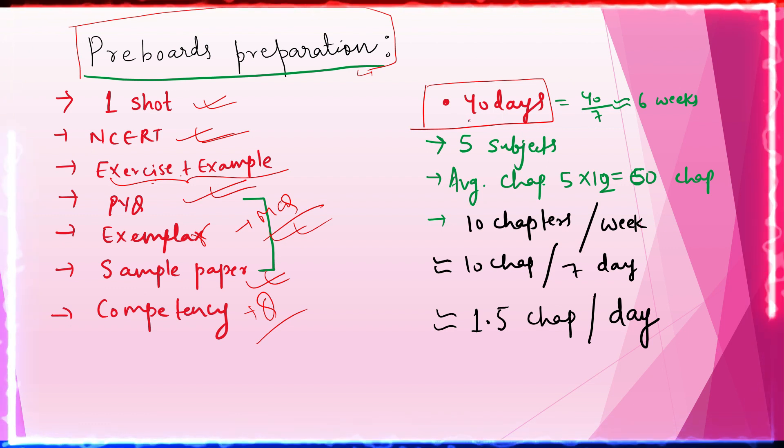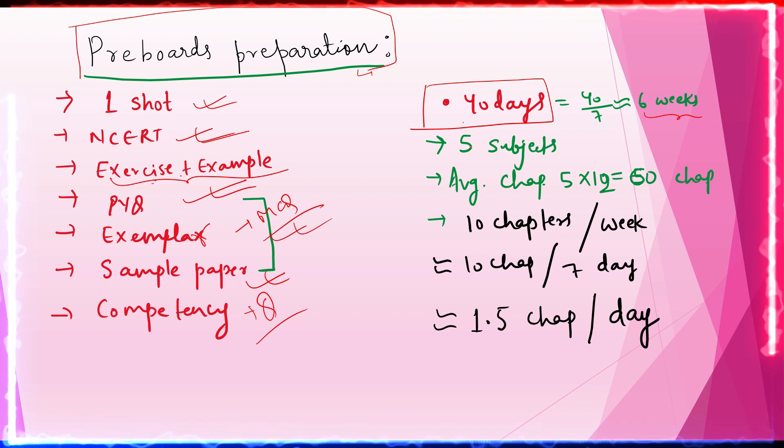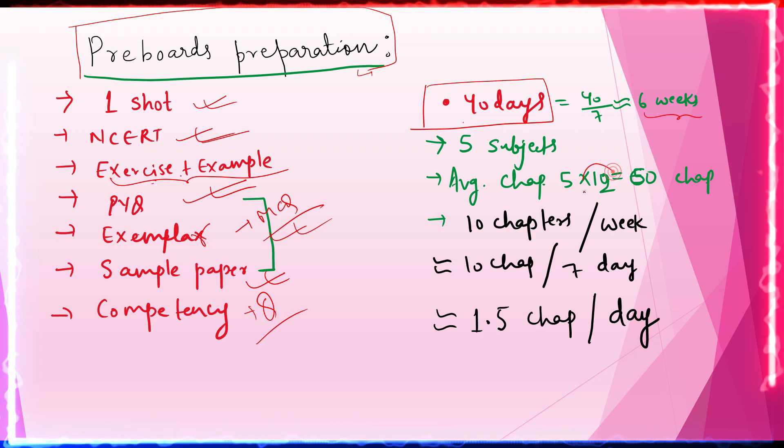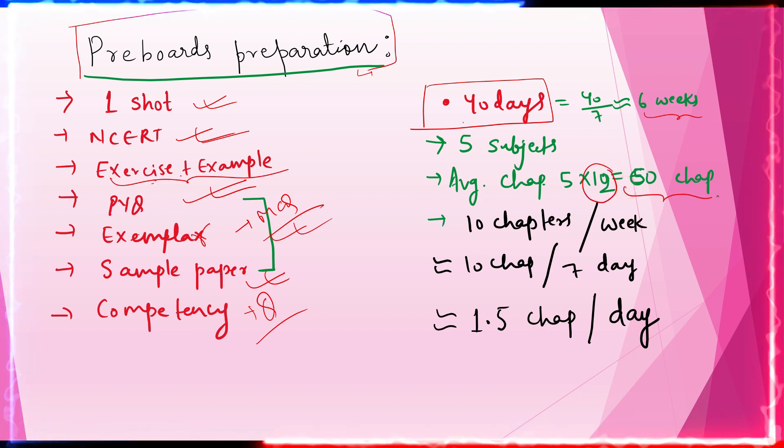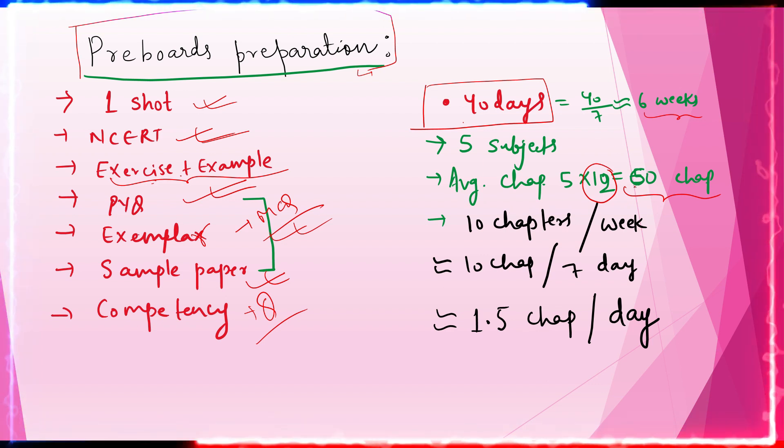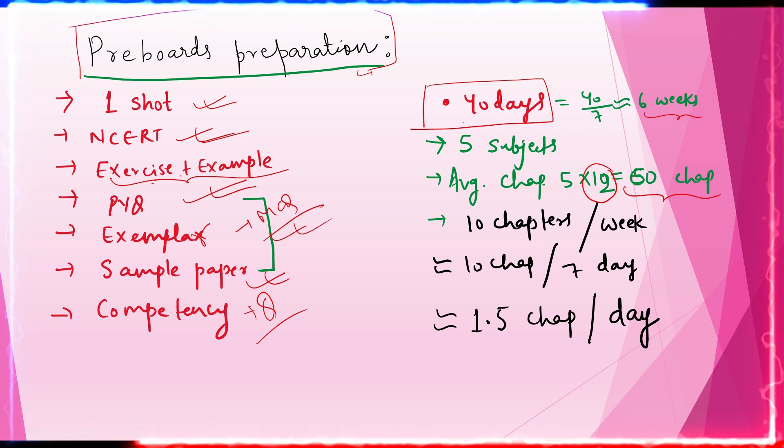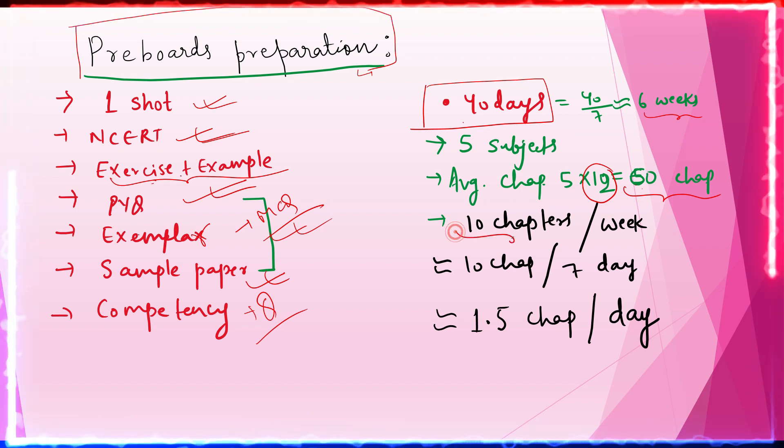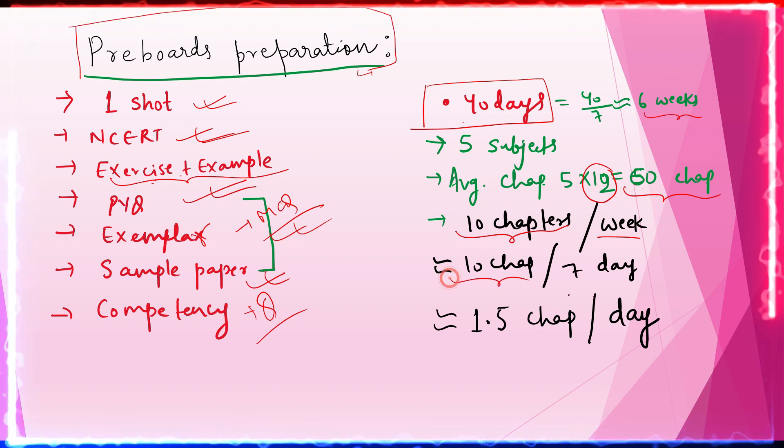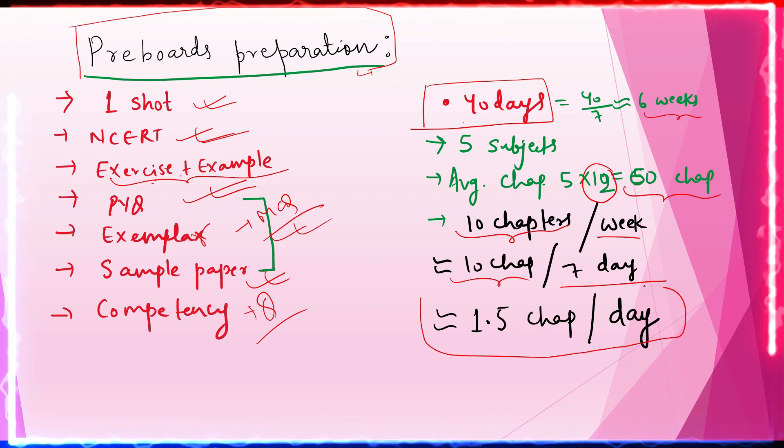We have 40 days, I mean six weeks. We have about five subjects. The average chapter will be about 60 chapters which you have to do in 40 days. So you have to do 60 chapters in six weeks, which means that you have to do 10 chapters every week and 10 chapters in seven days. So if you have completed 1.5 chapters in your syllabus, then you have to do your preparation if you continue to do it.